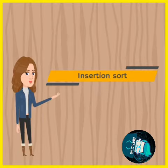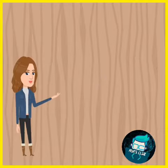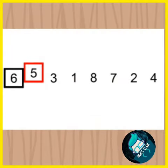Let's see insertion sort. In this the array is virtually split into sorted and unsorted parts. The first element 6 is considered as a sorted list.